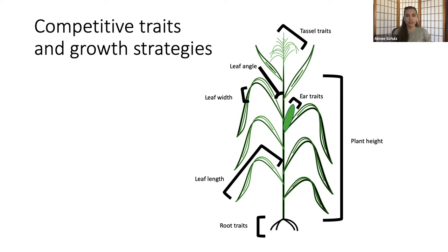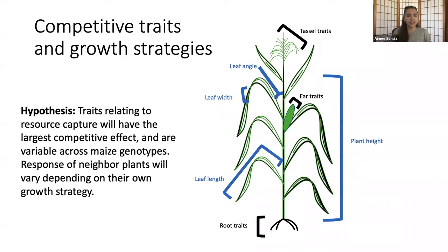Although we know from different ecological studies what traits are linked to competitive ability, we do not yet know to what extent these traits are really playing a role in how different combinations of traits or growth strategies affect a neighboring plant. My hypothesis is that traits relating to resource capture will have the largest competitive effect on their neighbors, and the response of neighboring plants will vary depending on their own growth strategy. Of particular interest are four traits: plant height, leaf length, leaf width, and leaf angle.